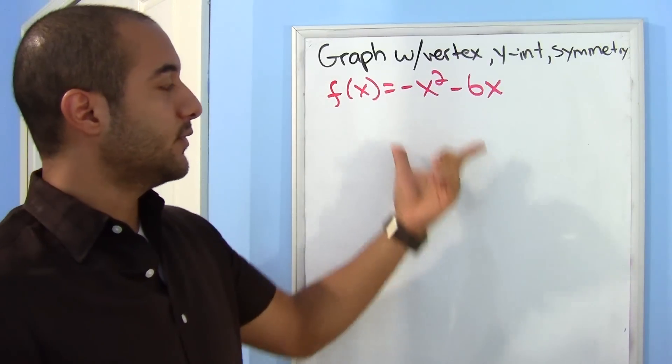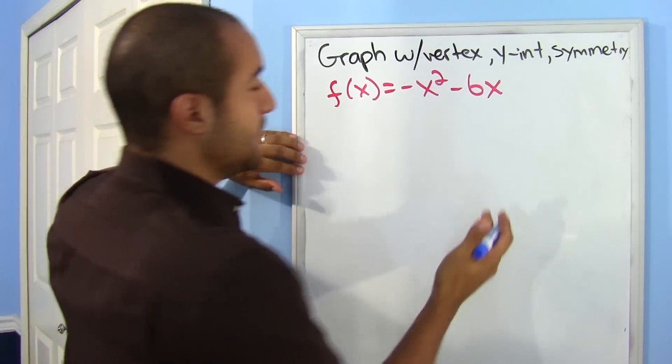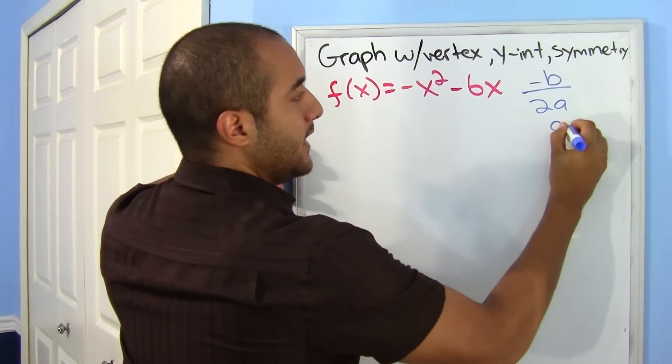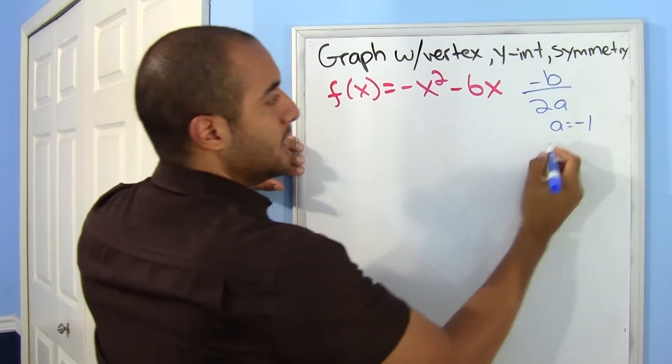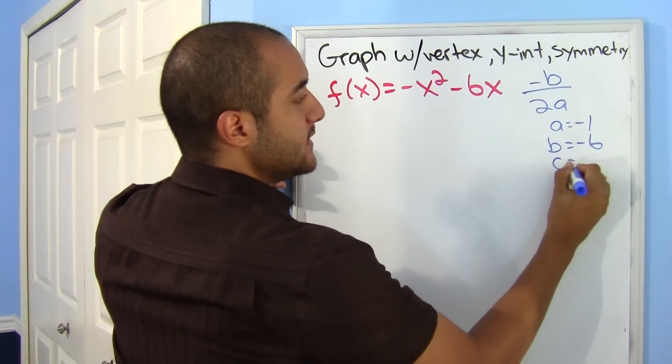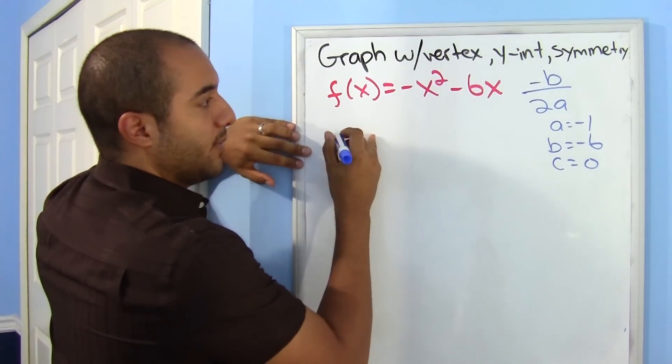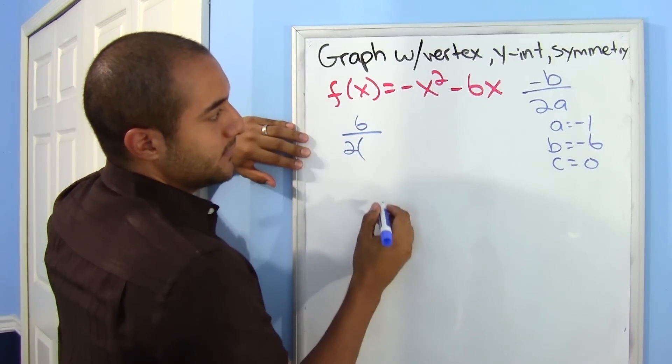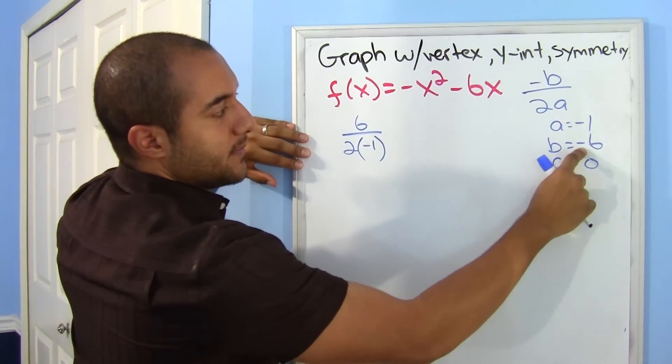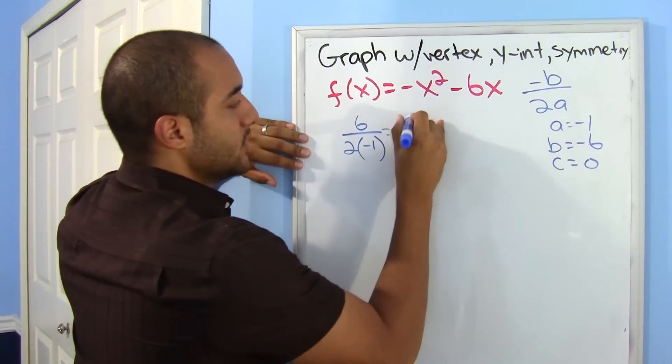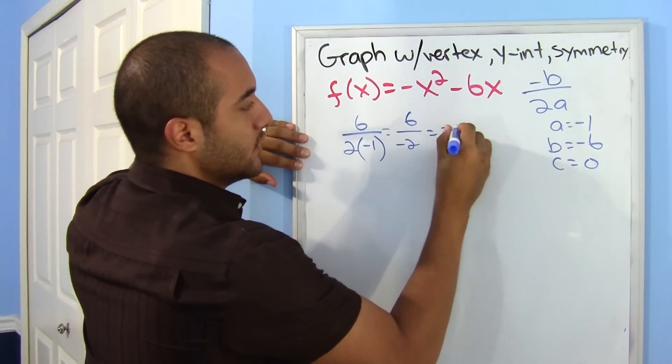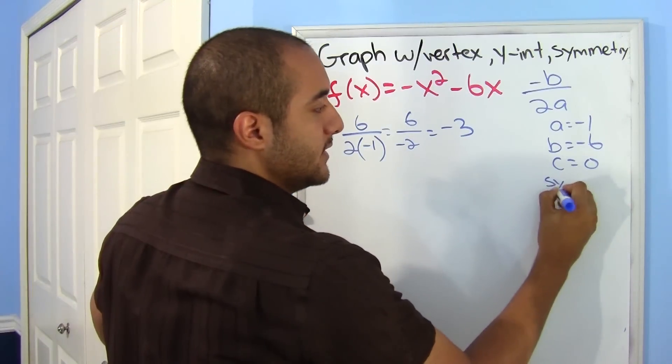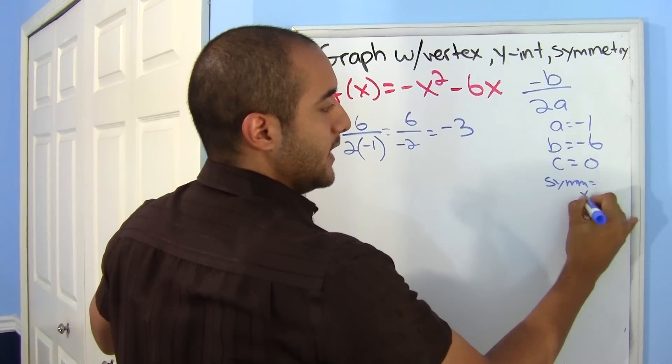Alright, let's go ahead and get the information for this function together. First thing I'm going to find is the vertex. And I know that's negative b over 2a. So here I notice that a is negative 1, b is negative 6, and c is 0 since there are none. So, for my vertex, I'm going to put in 6 over 2 times negative 1. Notice that it was negative b, so the opposite of a negative 6 is a positive 6. So, this is just 6 over negative 2, so negative 3. So that's my x-coordinate, and it's also my axis of symmetry.